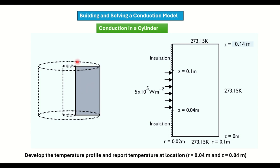We are going to model a portion of the cylinder and this is the 2D representation of that portion. The length is 0.14 meter and the width is 0.08 meter. One corner is at 0.02 meter. The boundary from z = 0.04 up to z = 0.1 meter is exposed to a heat flux of 5×10^5 watt per meter squared. We have insulation on one side.